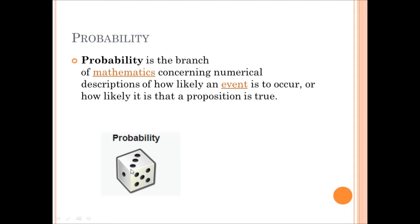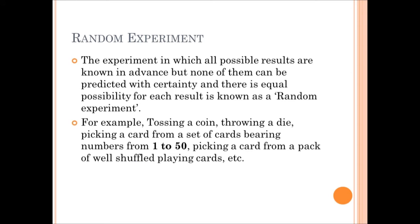For example, dice: when you throw a dice, there are 6 values — 1, 2, 3, 4, 5, 6. So this is the probability. In probability, a random experiment is one where all possible results are known. For example, 1 to 6 for a dice, or 1 to 52 for cards — with 4 aces and 4 queens available. This is called a random experiment.